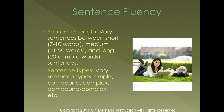Sentence fluency is going to take two different things: sentence length and sentence types. With sentence length, you want to vary your sentences between short, medium, and long sentences. People typically don't talk or write with all short sentences, all medium sentences, or all long sentences. So you want to mix them up so that you have a really nice, natural flow to your writing. As well, use a variety of different sentence types — simple, compound, complex, and compound-complex — to be able to achieve this.